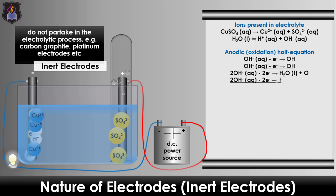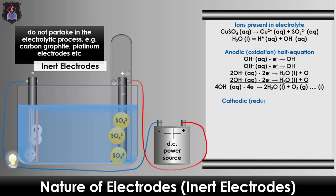Being an inert electrode, the graphite electrode will not have any effect on the electrolytic process. At the cathode, hydrogen and copper(II) ions compete for discharge, and the copper(II) ion is preferentially discharged since it is lower in the electrochemical series. Each copper(II) ion undergoes reduction by gaining two electrons to become deposited as copper atoms on the cathode, according to the cathodic half equation.